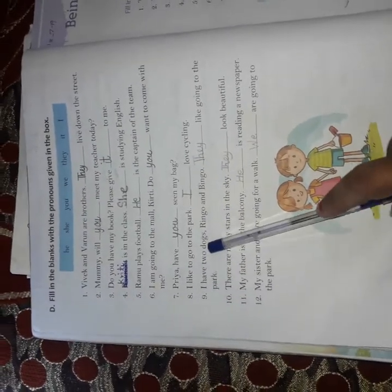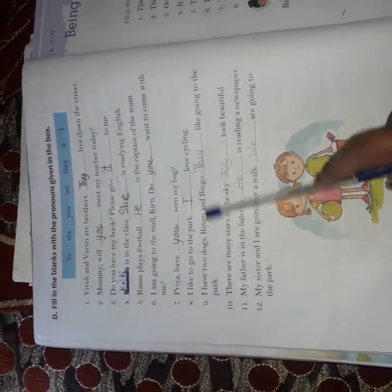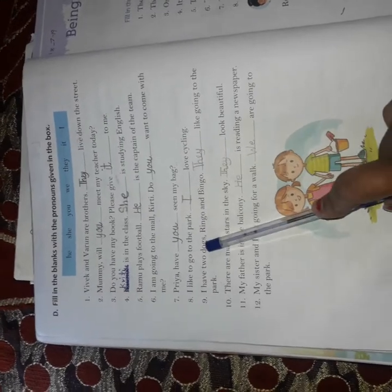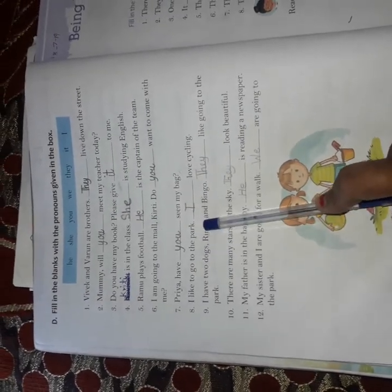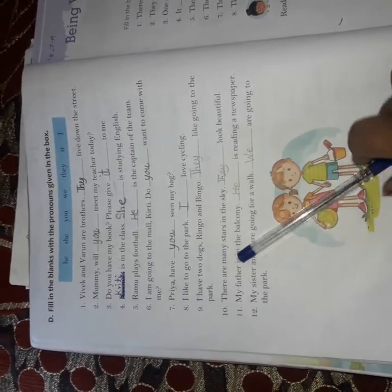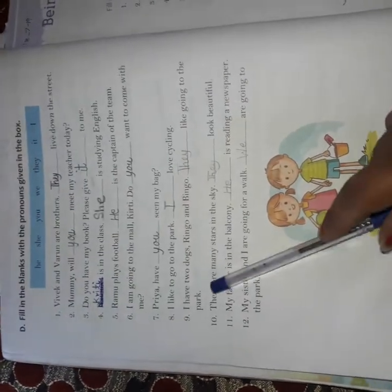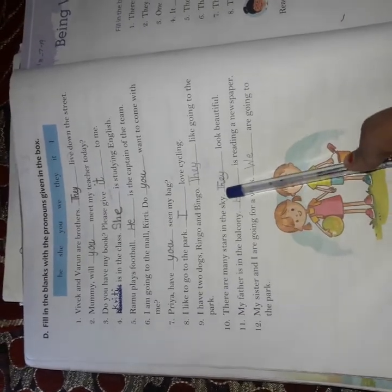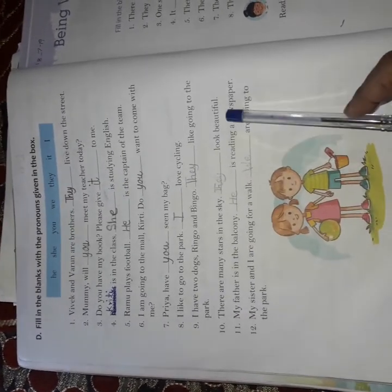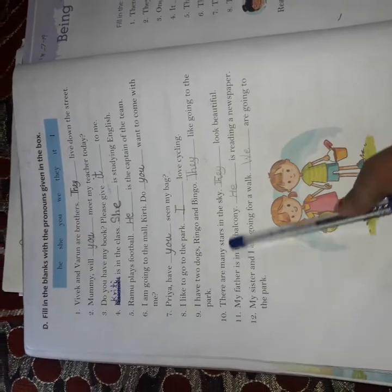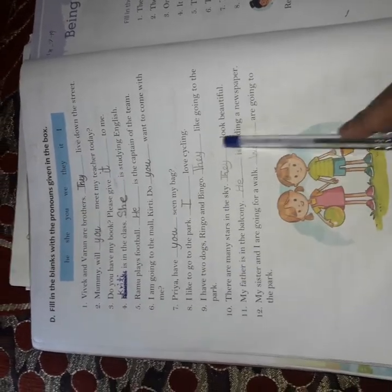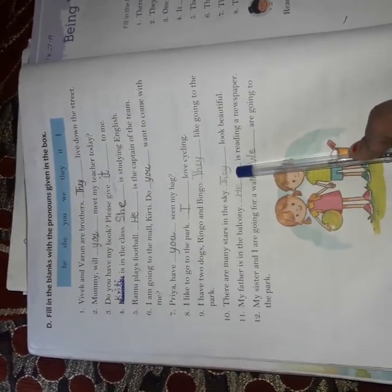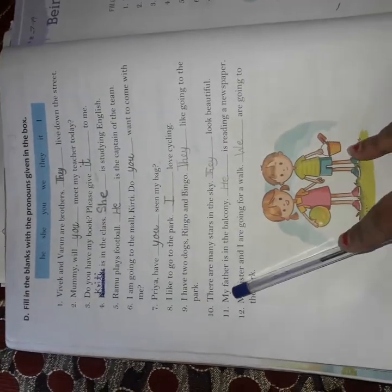Ninth, I have two dogs. Ringo and Bingo. Talking of dogs, not one but more than one. Ringo and Bingo. We will use they. They like going to the park. Tenth, there are many stars in the sky. Dash look beautiful. We are talking of many stars. Again, they. T-H-E-Y, they.